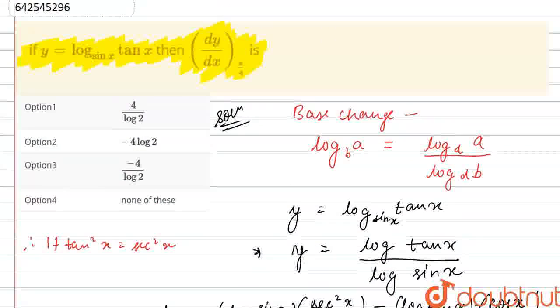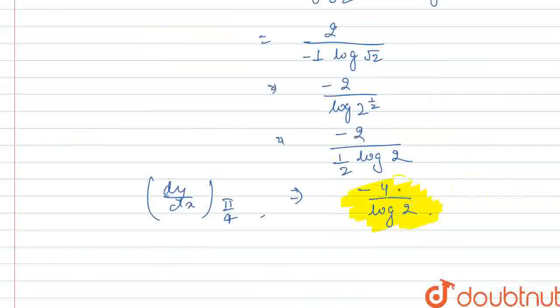The value of dy/dx at x = π/4 is −4/log 2. So option 3 is the correct option. Thanks for watching.